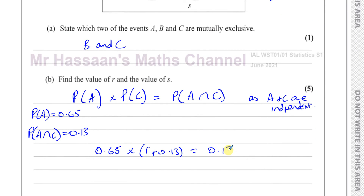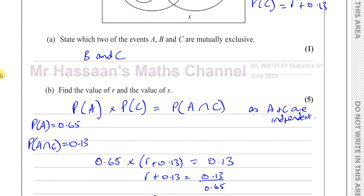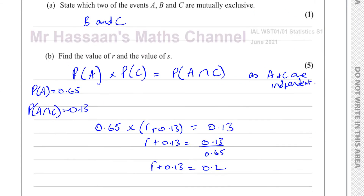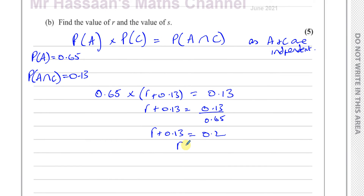So the probability of C altogether is 0.2. That means R = 0.2 − 0.13 = 0.07. So R = 0.07. Now we need to find the value of S.